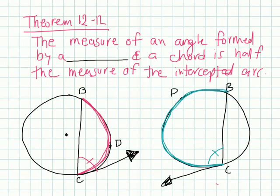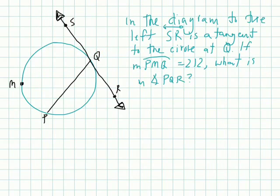Theorem 12-12. This states the measure of an angle formed by a tangent and a chord is half the measure of its intercepted arc. So however many degrees this angle is of angle BC, this angle will be half the size of however many degrees this arc is here. If we went the other way, however many degrees this is is formed by a chord and a tangent. However many degrees this is is going to be half of the arc present here.